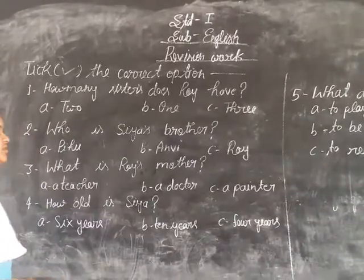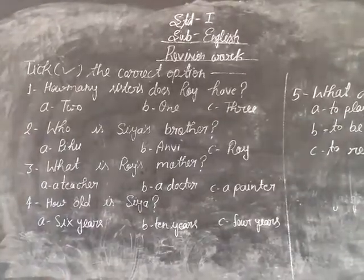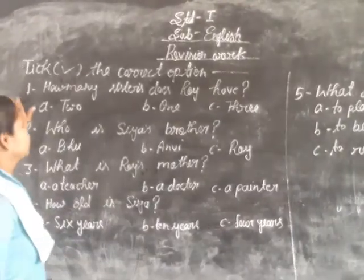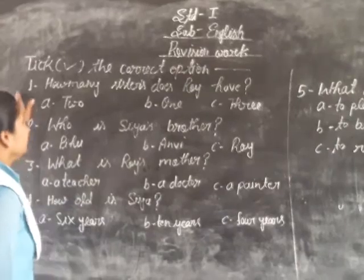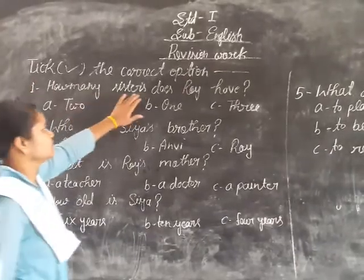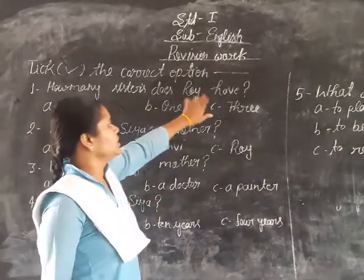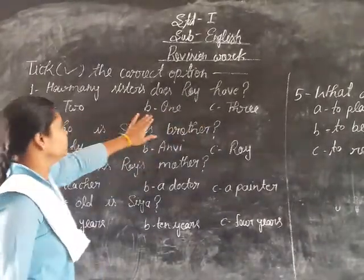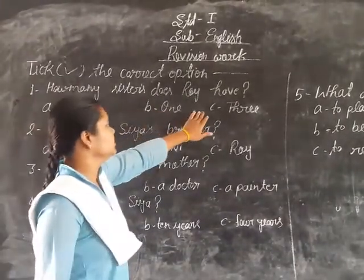This is the correct option first. How many sisters does Roy have? Option A: 2, B: 1, C: 3.